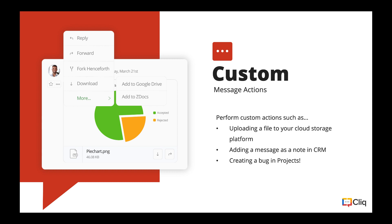Next up we have message actions. A message action is a custom action that you can perform on a message, and it can be dependent on the type of message. For example, you can enable a particular message action only for messages of type text, or enable actions for messages of type attachment. In this example, a message action enabled only for attachments allows you to upload files shared in Cliq directly to Google Drive, Zoho Docs, or any cloud storage platform. Another example is a message action for text messages — you can easily add the message as a note in your CRM, or add it as a task in Zoho Projects or any project management software you might be using.